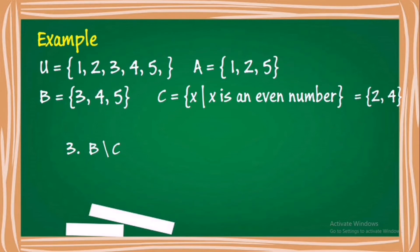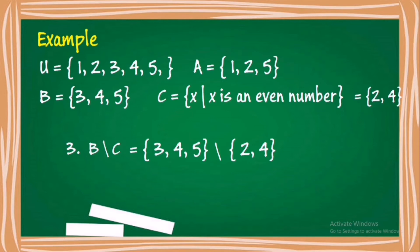Let's find B minus C. B minus C must contain elements of B — which are 3, 4, and 5 — that are not elements of C — which are 2 and 4. So what elements of B are not elements of C? The answer is 3 and 5. Therefore, set B minus C contains elements 3 and 5.